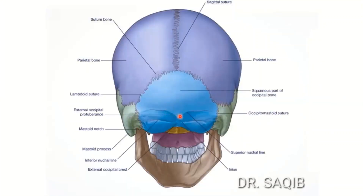A very important feature here is the external occipital protuberance, a very prominent point approximately 6 centimeters below the lambda — at the junction of the head and neck posteriorly. The most prominent point on the external occipital protuberance is the inion, a craniometric landmark already covered in the previous lecture on craniometric landmark studies.